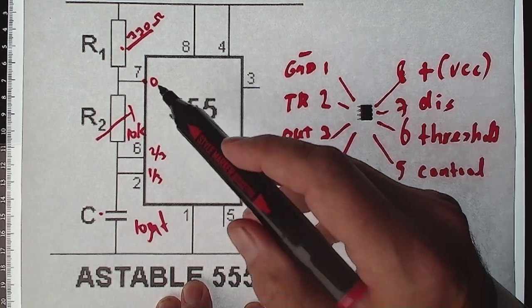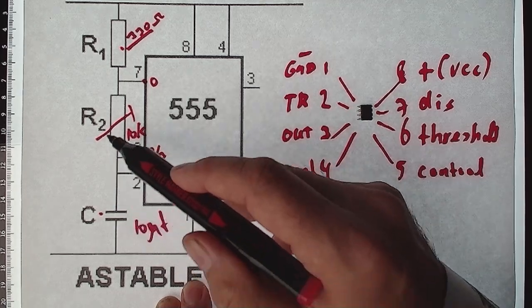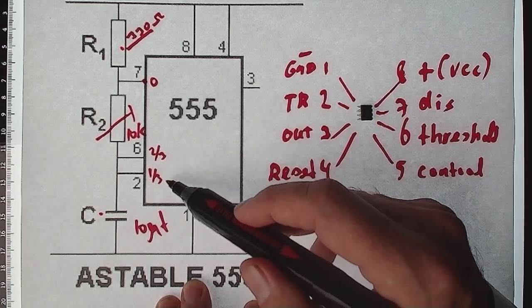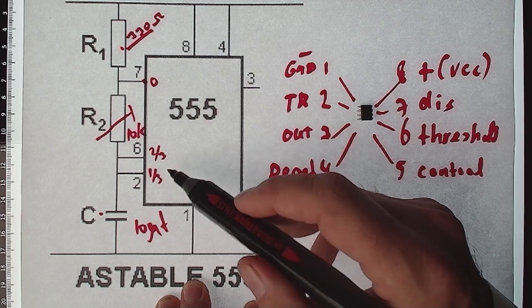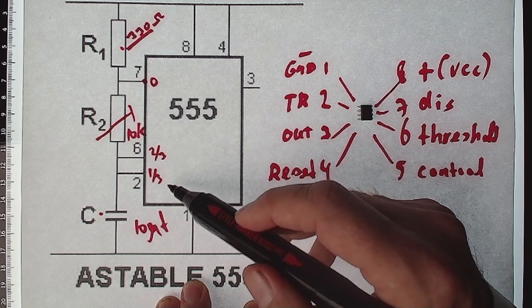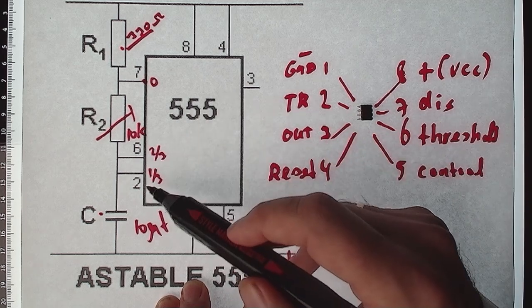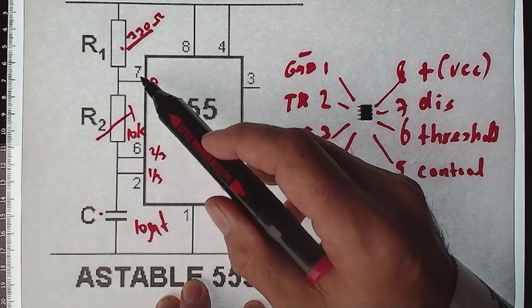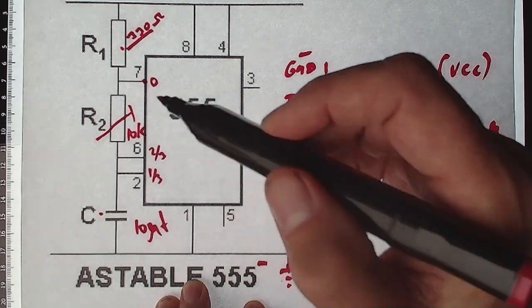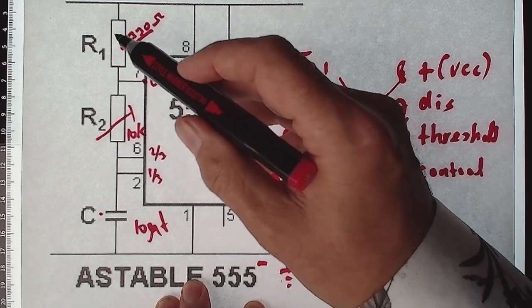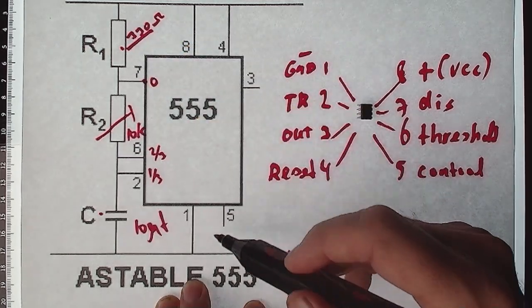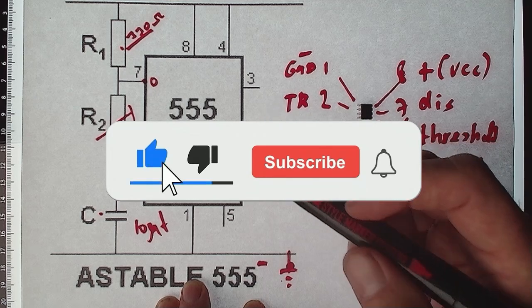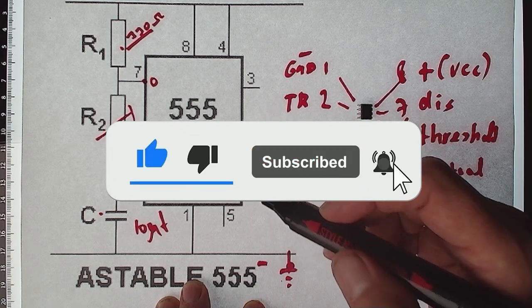In that case when this grounded, the capacitor discharges to one third of its power supply voltage. In that case it's detected by pin two and it turns pin seven off again so the cycle will start again and charge the capacitor. Now that's what happens.